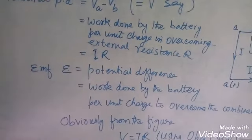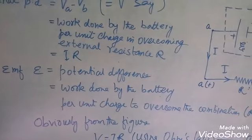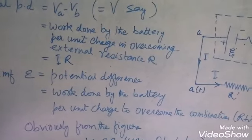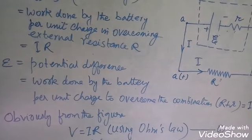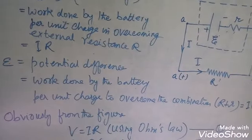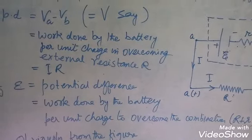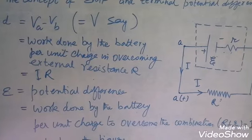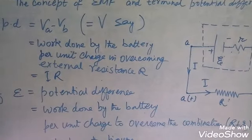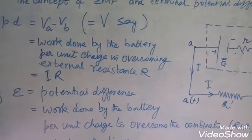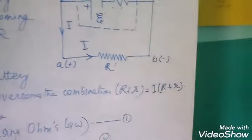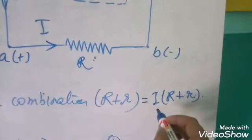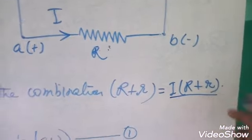Now let us come to EMF. EMF is also a sort of potential difference, but this potential difference is the total work done by the battery per unit charge to overcome the resistance combination capital R plus small r. So EMF is the potential difference across the resistance combination R plus r, and in accordance with Ohm's law it must be equal to I times (capital R plus small r).